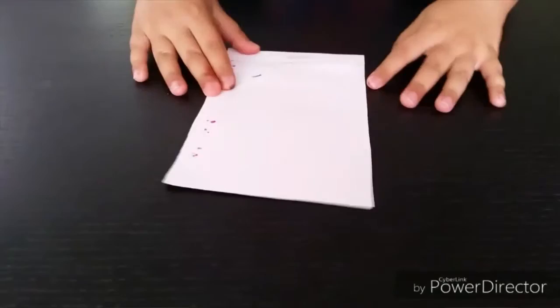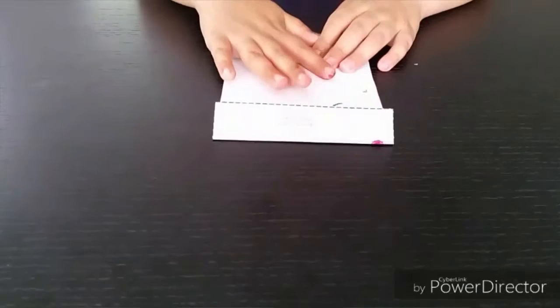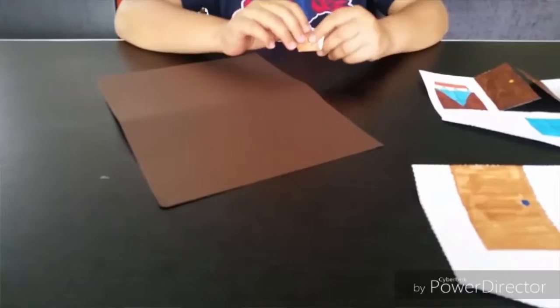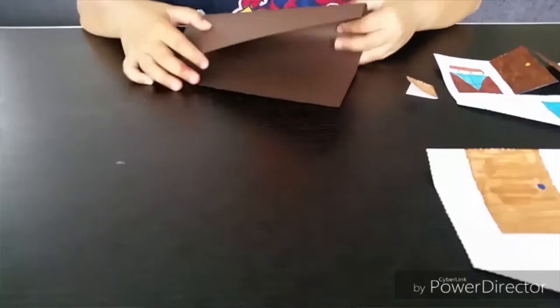Fold the tabs on the side pieces backwards. Fold the fifth piece of paper in half, hamburger style. This will be the roof.